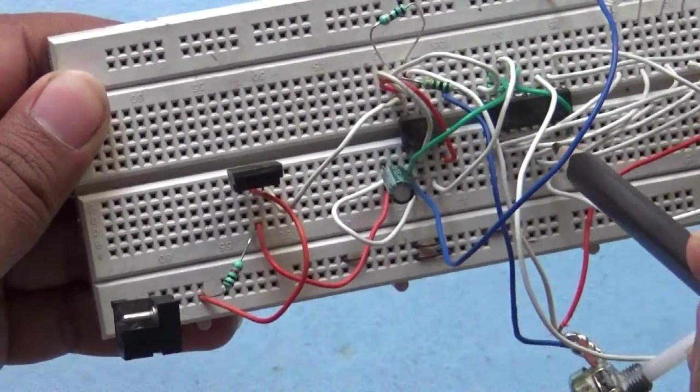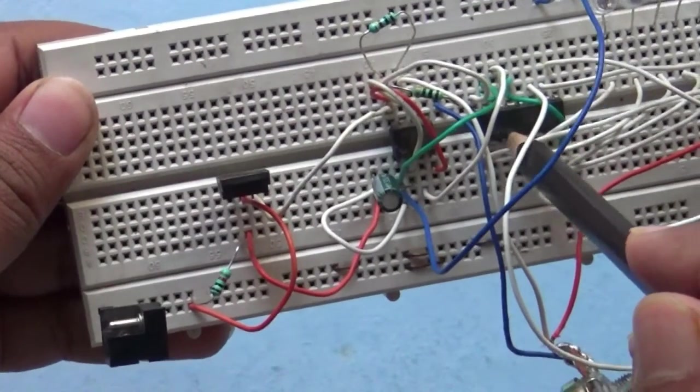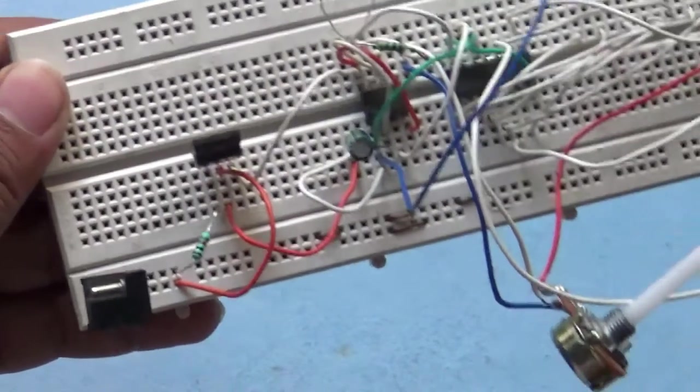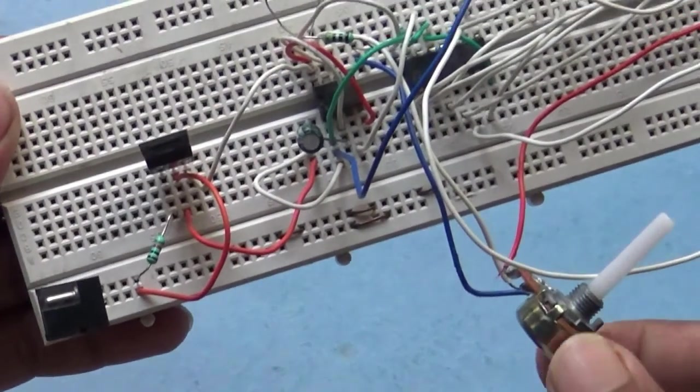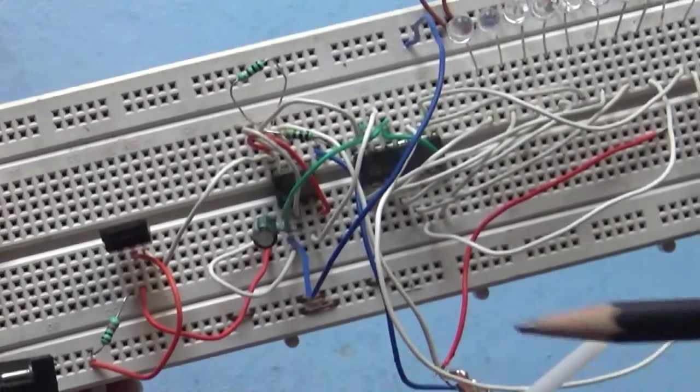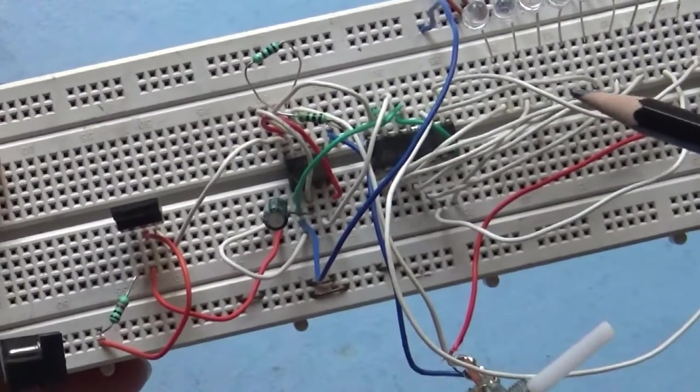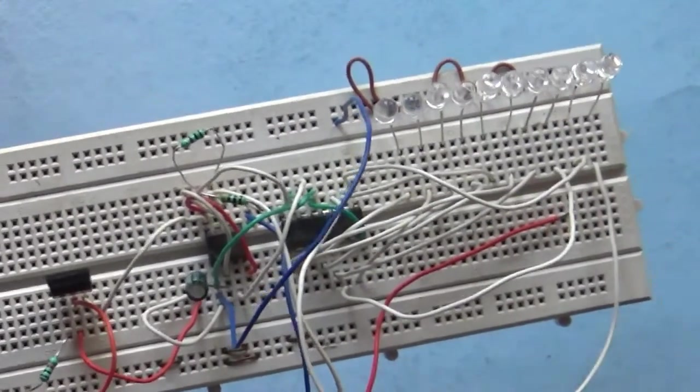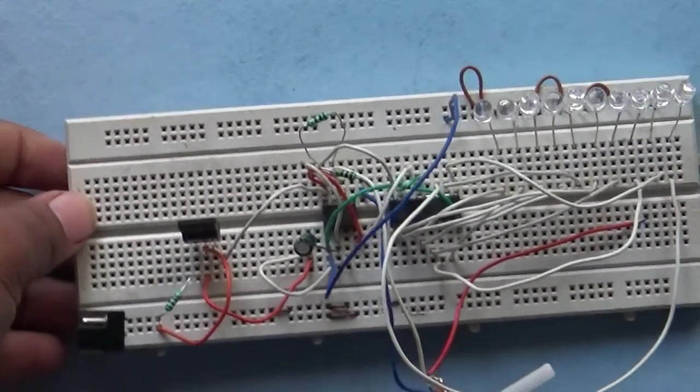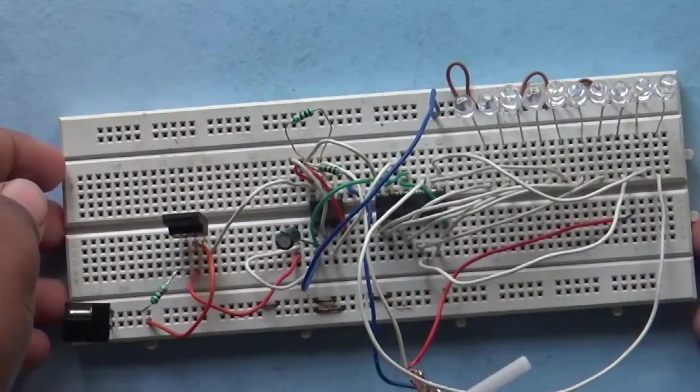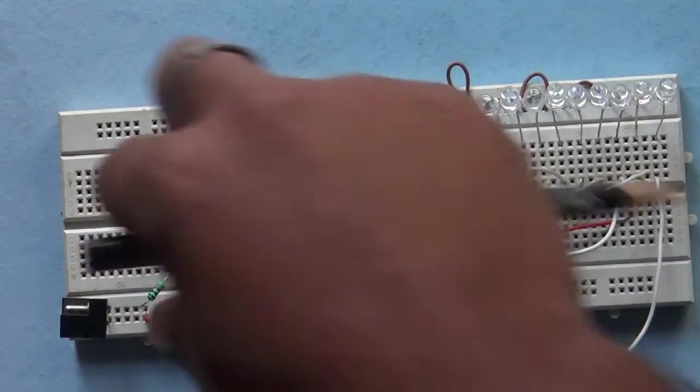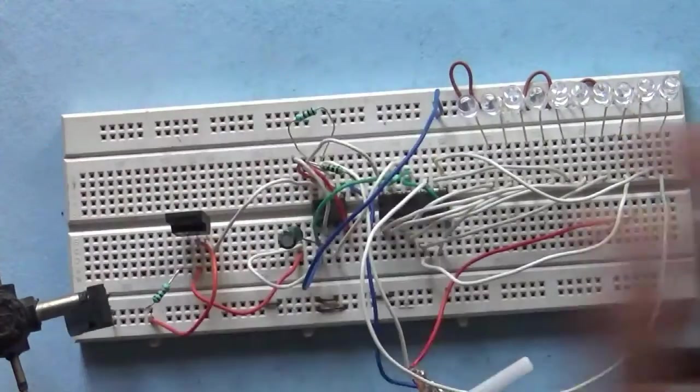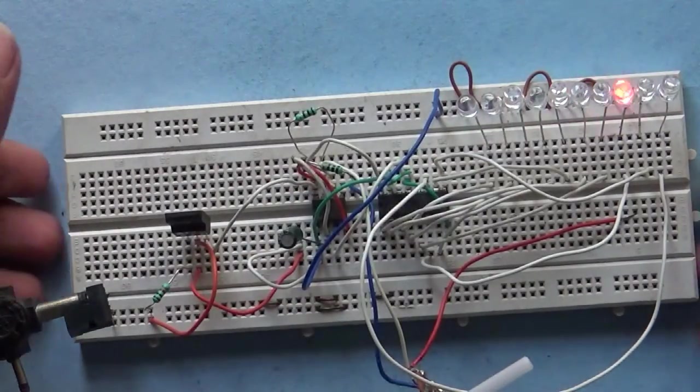And this IC is 4017 and it is variable resistor. And by this wires these LEDs are connected. Okay, let's try to turn it on. Okay it's working.